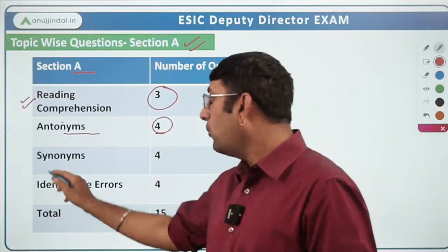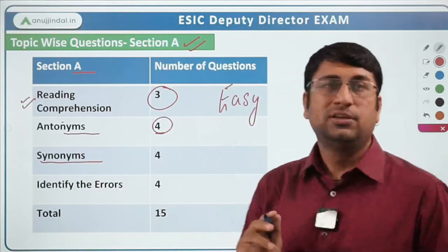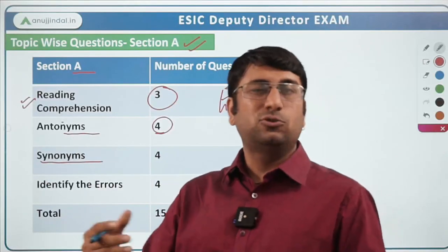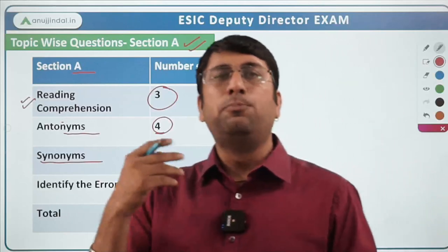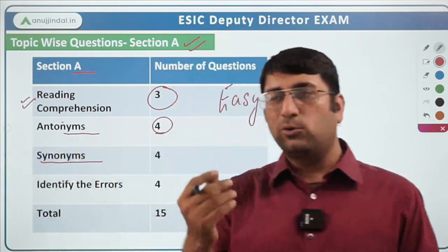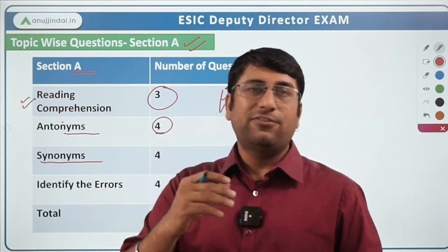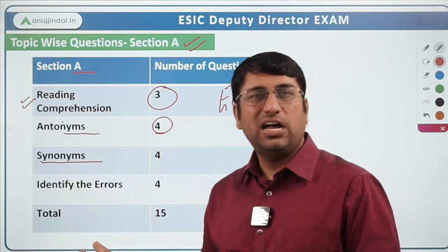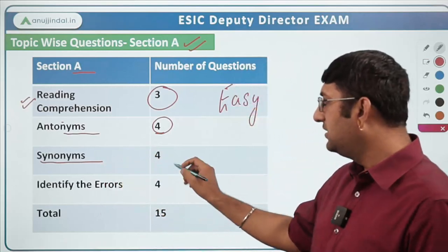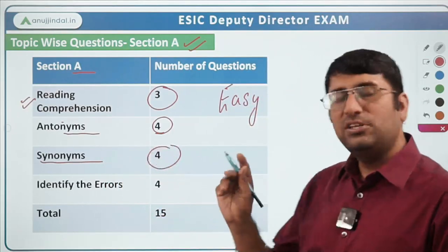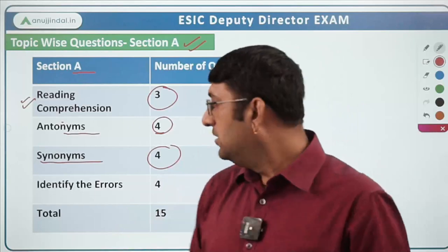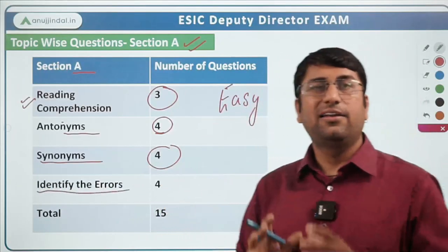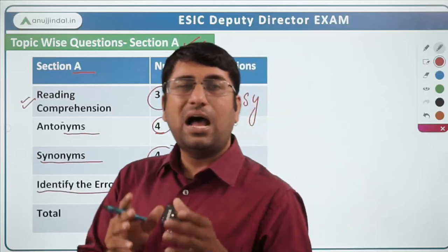Third topic was synonyms — words with similar meanings. For example, if given the word 'importance' and asked to identify a similar word, 'imperative' would be the answer. Again a very simple topic and 4 questions were asked from this. Fourth topic was 'identify the errors' — you are given some sentences and have to identify the grammatical error or mistake in word choice, for example whether 'is' or 'are' should be used.